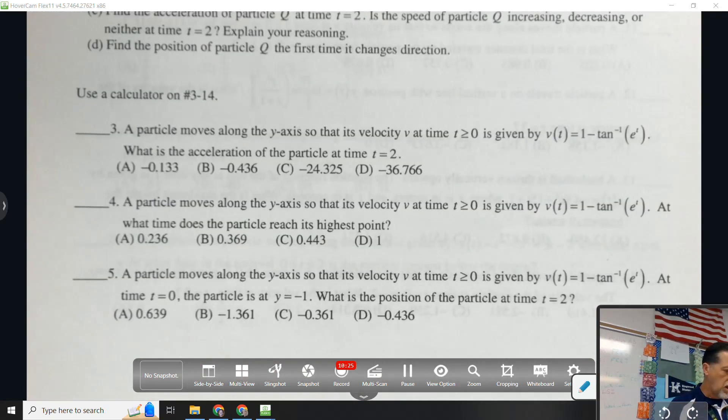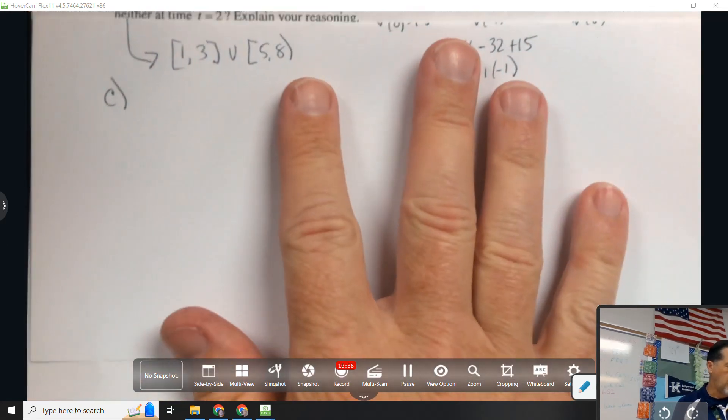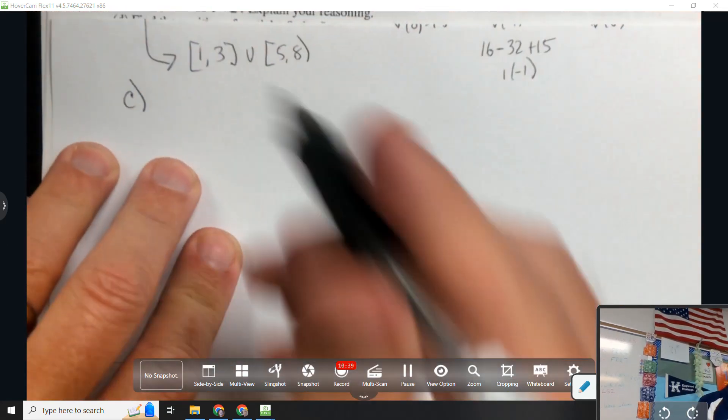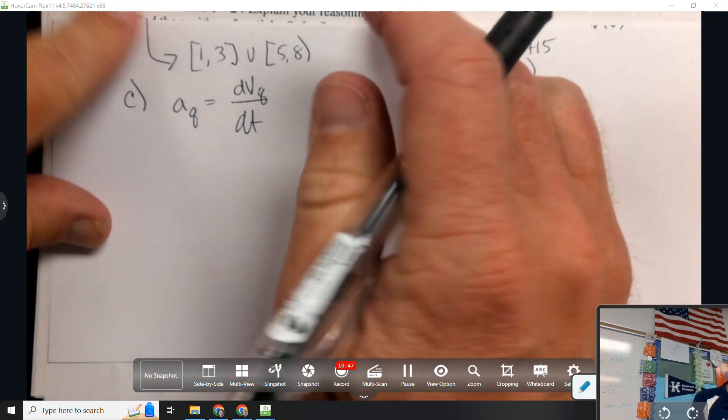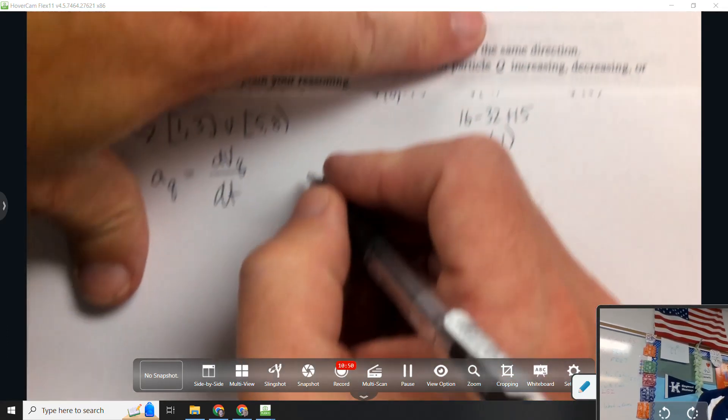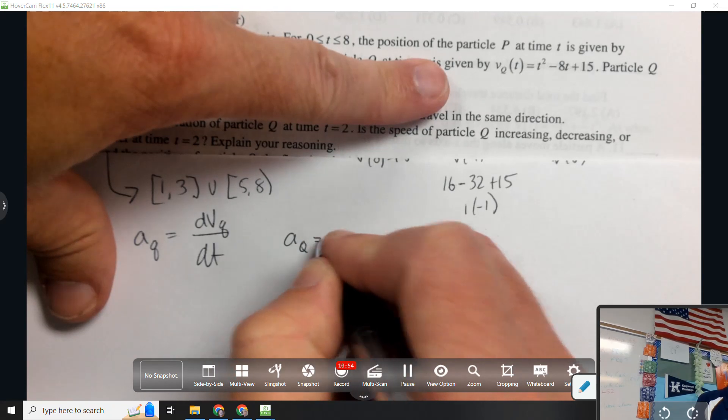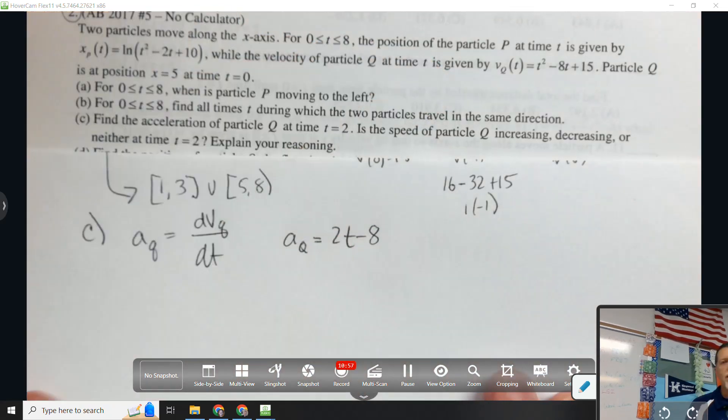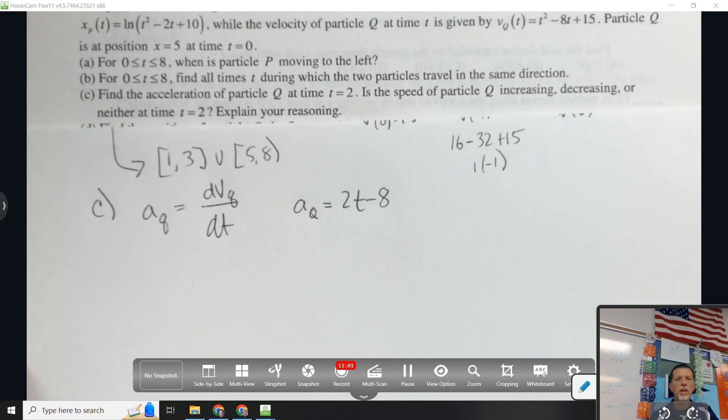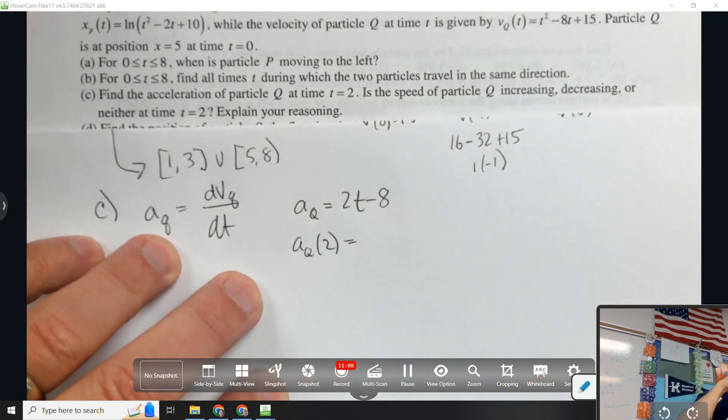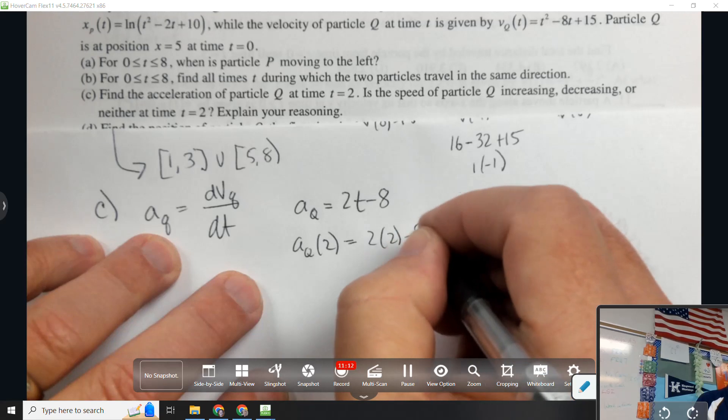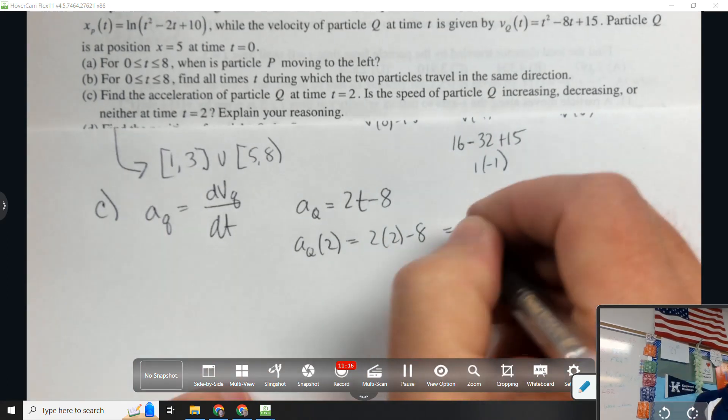Part 3: find the acceleration of particle Q at time 2. That's not bad, because that's just the derivative of the velocity. So A_Q is dV_Q/dt. V_Q is up there. So A_Q is 2t - 8. At time 2: A_Q(2) is 4 - 8, which is -4.